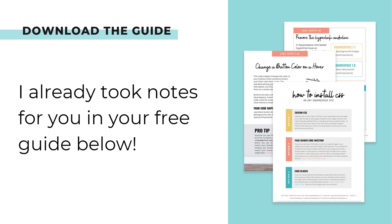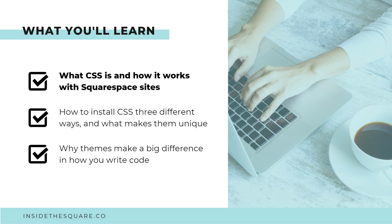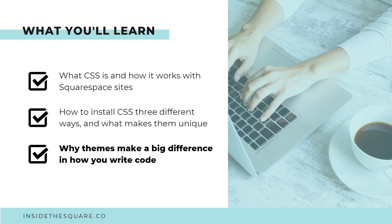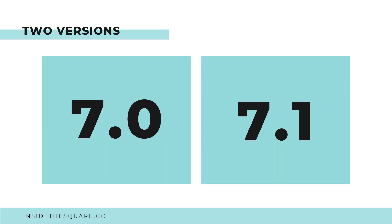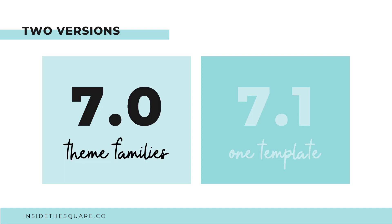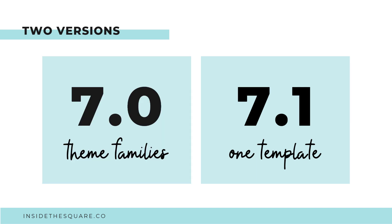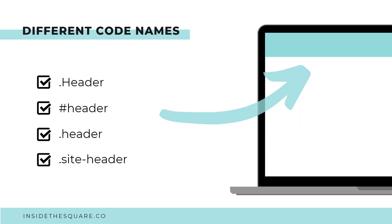All of this information is in that free guide. Now, lastly and arguably most importantly, let's talk about why themes make a big difference in how you write code. There are actually two versions of Squarespace right now: Squarespace 7 and Squarespace 7.1. Squarespace 7 is built with theme families, while 7.1 is built on one template — meaning all CSS codes for 7.1 will work across all 7.1 websites. But for Squarespace 7 theme families, some use different names for the same element.